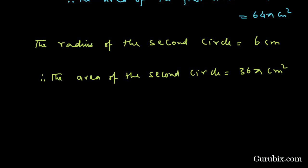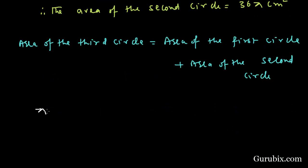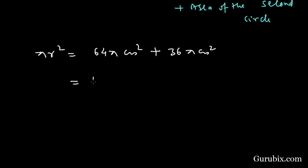This is given to us that the area of the third circle equals the area of the first circle plus the area of the second circle. The area of the first circle is 64 pi cm squared, and the second is 36 pi, which equals 100 pi cm squared.